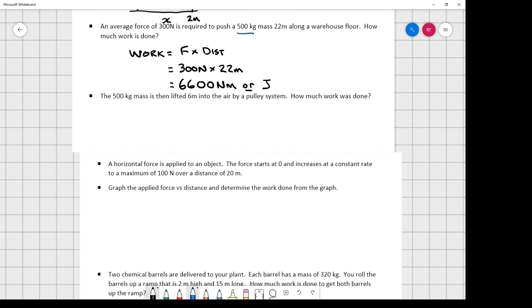So our next question, 500 kilogram mass is then lifted 6 meters into the air by a pulley system, how much work was done? So in this case, what I have is my mass that's sitting here on the ground, and I'm going to lift them up into the air, lift them up 6 meters, and how much work was done. Well, in order to lift this mass, I have to overcome the weight of this object, and in order to do that, I'm going to have to provide some force to lift it that's going to be at least equal to the weight.